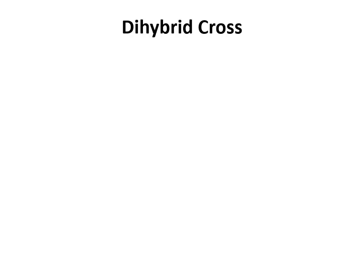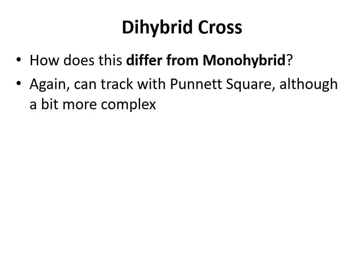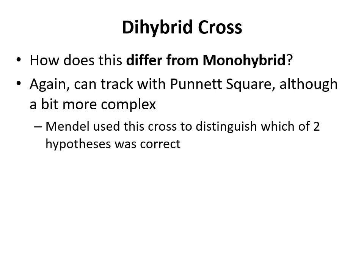The next type of cross Gregor Mendel looked into is the dihybrid cross. 'Di' tells you two — so now you are looking at two traits at once. Instead of just looking at the height of the plant, you'll also look at the color of the plant pods at the same time. You can track this with a Punnett square, but it's more complex than our monohybrid ones. Mendel was trying to distinguish between two hypotheses: independent assortment of alleles versus dependent assortment of alleles.